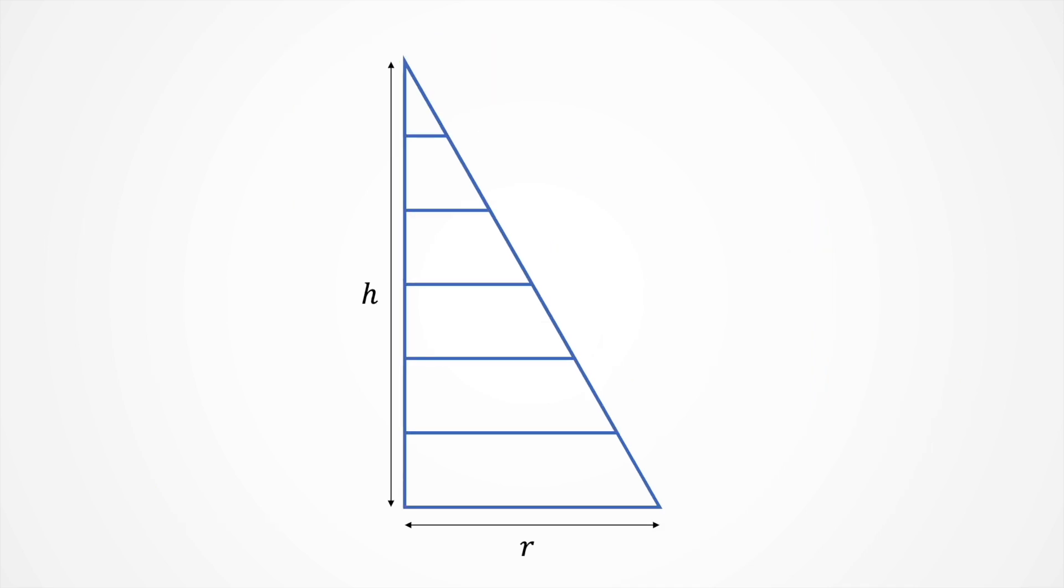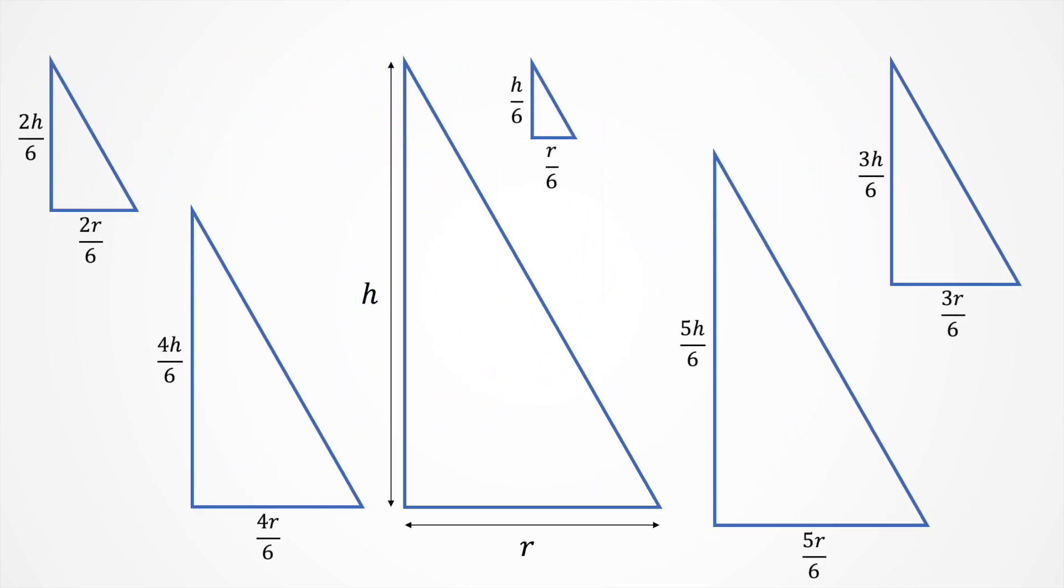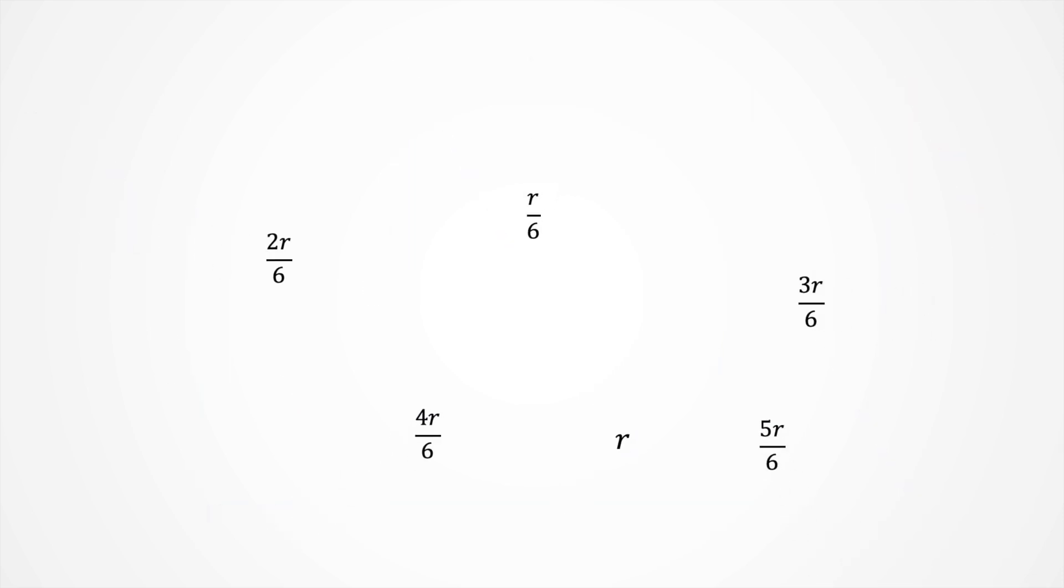This theorem can be extended for any number of cuts. We take the similar triangles and obtain their bases. So we will end with a sequence for the cylinder's radius with this pattern. Now, we know how to obtain the radius for every number of cylinders. Let's try to calculate some approximations.